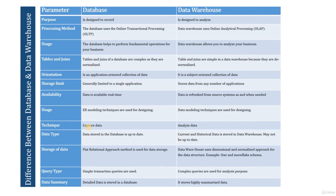The next parameter is data type. In database, the data stored is up to date. In data warehouse, both current and historical data is stored, and may not be up to date — updates happen weekly, bi-weekly, monthly, or quarterly. Only at the time of updating will you see the latest data in the data warehouse.